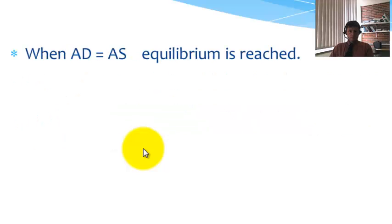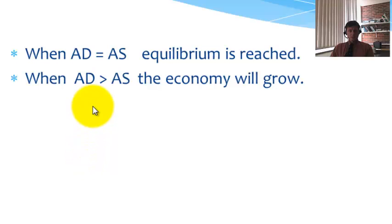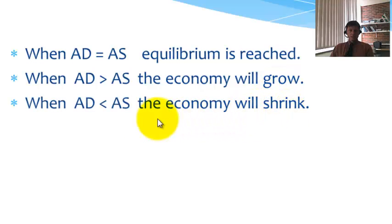Now again, looking at equilibrium. When aggregate demand is equal to aggregate supply, equilibrium is reached. When aggregate demand is bigger than aggregate supply, the economy will grow. And similarly, the economy will shrink when aggregate demand is less than aggregate supply.